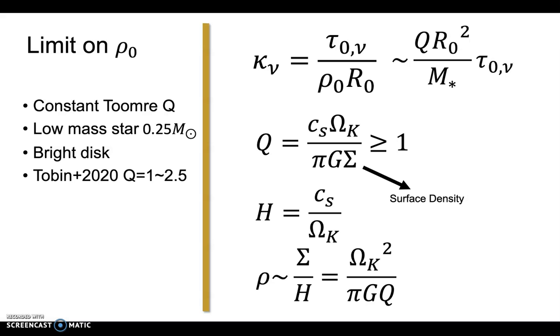Motivated by this, we prescribe a disk model that assumes the Toomre Q of 1. Even if it is not 1, we can at least have an upper limit to the density, which would mean a lower limit to opacity.